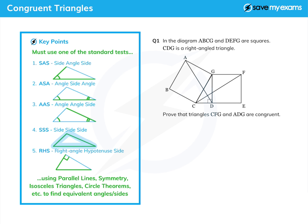And this is sometimes the easiest one: if you can show that all three sides are the same in each triangle, so each pair of sides is the same, then that will do as well. And then there's the special case one.